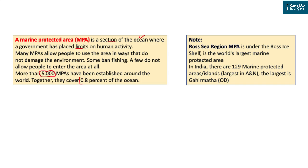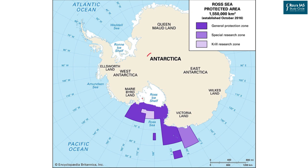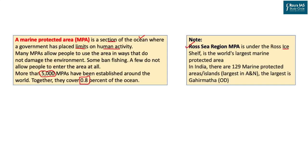The world's largest marine protected area is the Ross Sea region, under the Ross Ice Shelf in Antarctica, on the southern part of the Australian continent. In terms of India, there are 129 marine protected areas. The largest number are in Andaman and Nicobar including the islands. The largest marine protected area in India is Gahirmatha, in the state of Odisha.